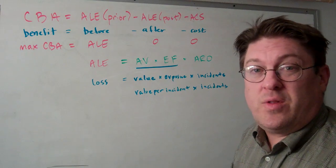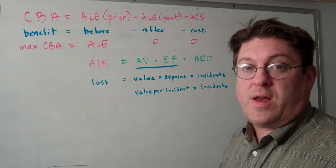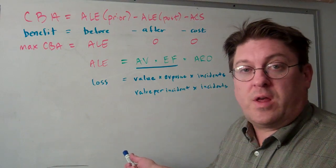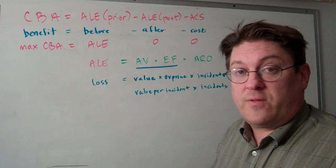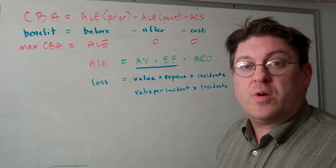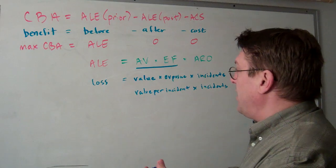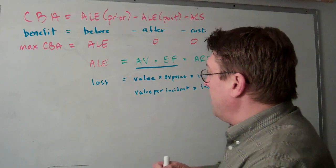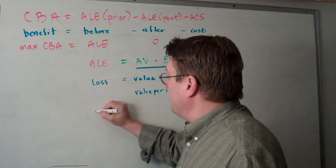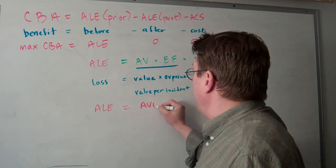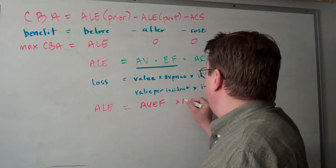The reason we need to do this is because almost all of the reports you find tell you what the loss was, but they don't tell you what the assets were that were at risk in the first place, and they certainly don't tell you the exposure factors. So we can say ALE equals AVEF times ARO.